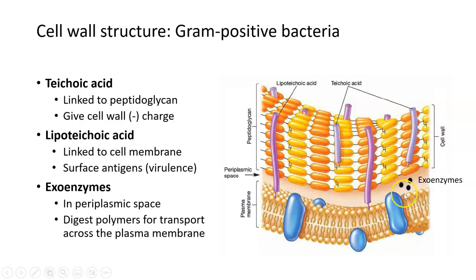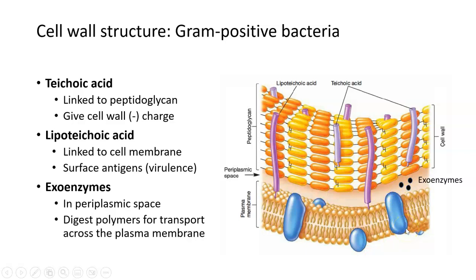Additionally, there are some exoenzymes which exist in what's called the periplasmic space — the space that exists between the membrane and the cell wall. There's always a little bit of empty space between the plasma membrane and the cell wall. Exoenzymes exist here and their job is to usually digest big polymers like sugars to be transported across the plasma membrane.